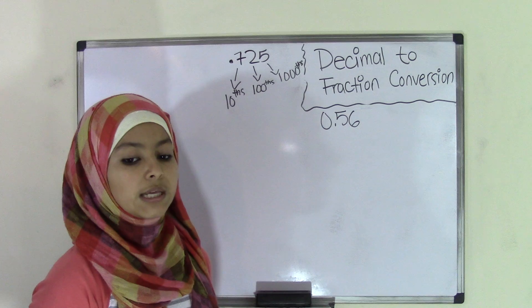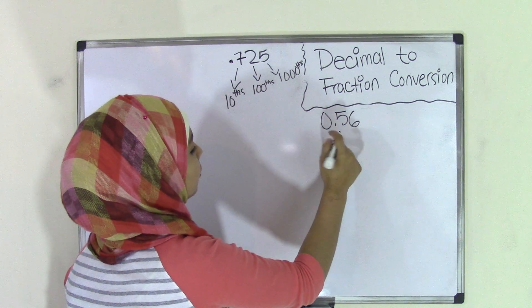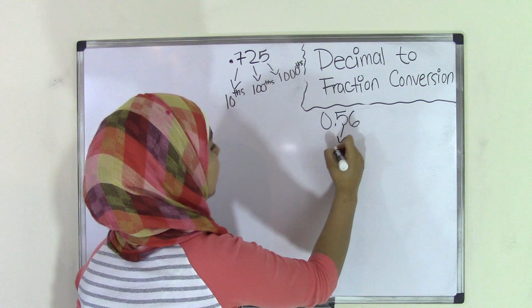The first step in converting this into a fraction is to label this with its place values. The number 5, which is the number right after the decimal point, is going to be in the tenths place.